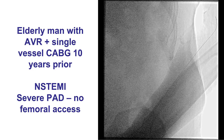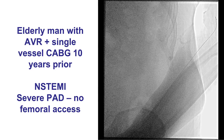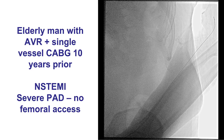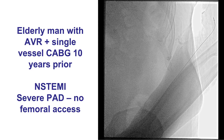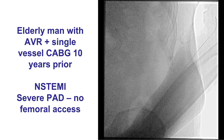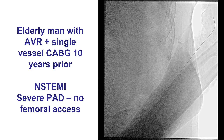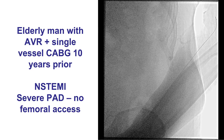The patient was an elderly man who had previous aortic valve replacement and single-vessel coronary bypass graft surgery with a vein graft to the right coronary artery 10 years prior. He presented with non-ST elevation myocardial infarction and had severe peripheral arterial disease, with no option for femoral access.